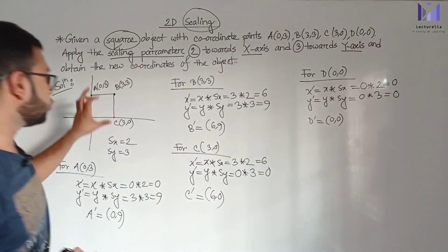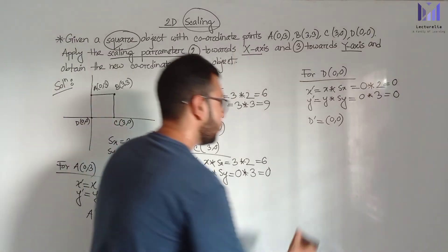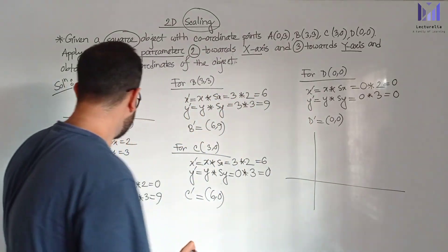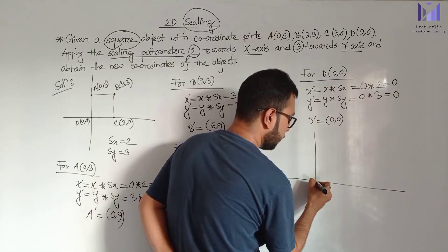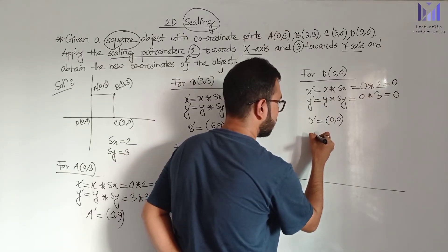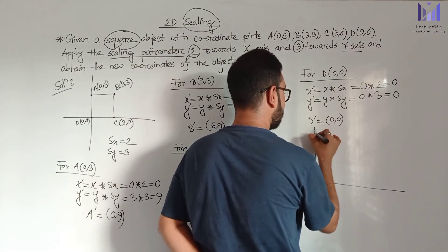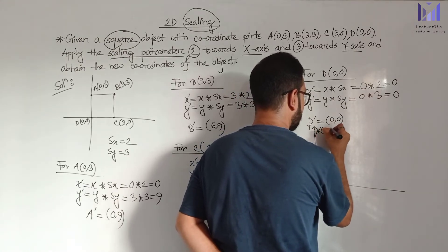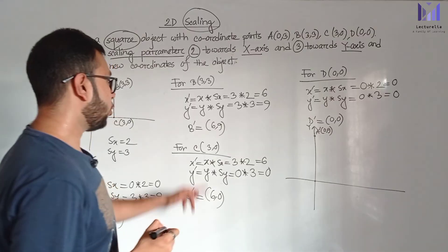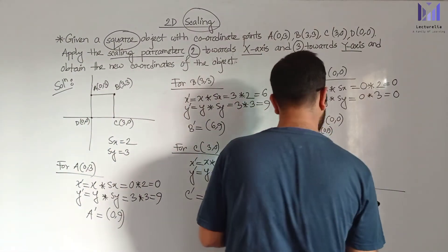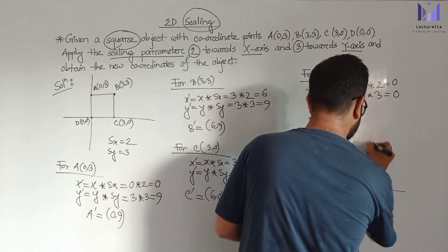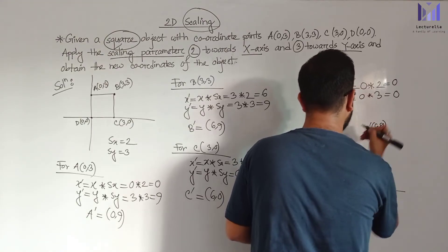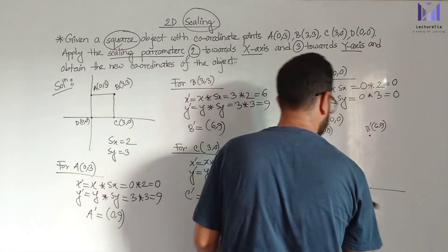So initially the object was a square of a certain size. After applying the scaling: A-prime is (0, 9), B-prime is (6, 9), C-prime is (6, 0), and D-prime is (0, 0). The object has been scaled and the new transformed coordinates have been obtained.